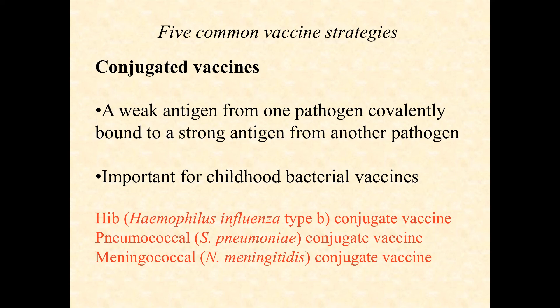So what scientists have done is conjugate it — covalently link it — to some other strong antigen, usually a good antigenic protein from another organism. What you end up doing is building a good immune response to both. This is a pretty serendipitous find: by linking these together, we could overcome some of the limitations of that T-independent response.